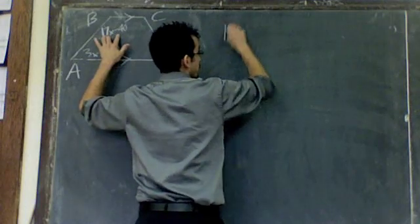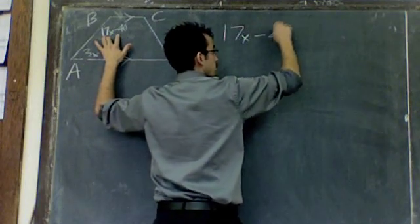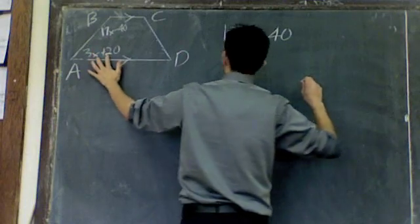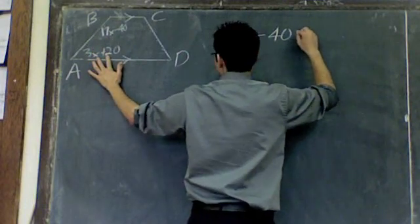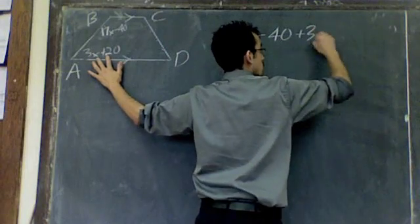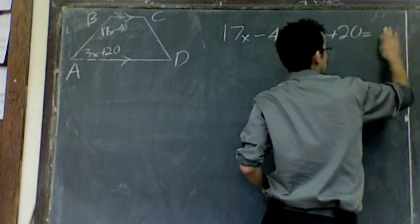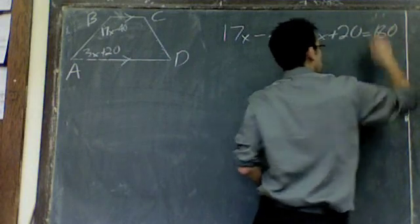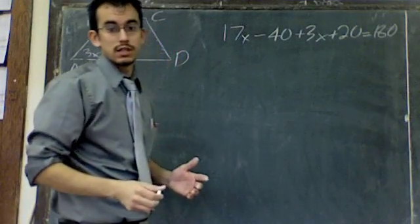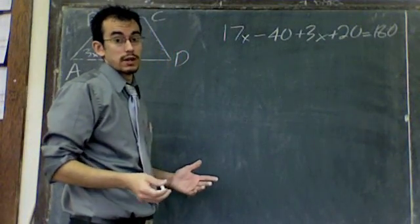17X minus 40, plus angle A, which is 3X plus 20, should equal 180, because they're supplementary. And this we just have to solve. Combine your like terms, solve for X.